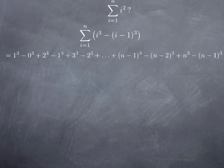If I write out what it is, when i is 1, I get 1 cubed minus 0 cubed, so just 1 cubed. Then when i is 2, I get 2 cubed minus 1 cubed. When i is 3, 3 cubed minus 2 cubed, and so on, until when i is equal to n, I get n cubed minus n minus 1 cubed. Now you see that I get 1 cubed minus 1 cubed, so that cancels out.